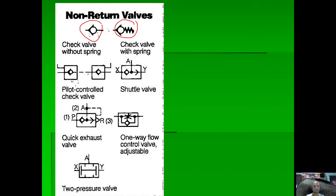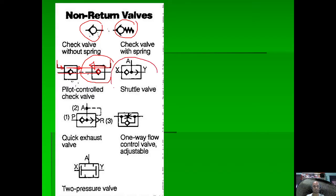We have a non-return check valve without spring and a non-return check valve with spring. For the pilot-controlled check valve, the ball will not open unless there is pressure on the pilot port pushing the ball to the right to open the valve. If there is pressure on the other side, it pushes the ball to the left to close the valve.